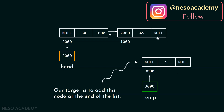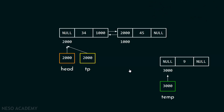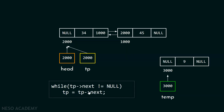Step one is to traverse the list. It is important to traverse the list so that we can reach the end node and then update the next and prev parts accordingly. For this purpose, I will keep one pointer tp, which will initially point to the first node of this linked list and later point to the last node. We can do this with: while tp->next not equal to null, tp equal to tp->next.